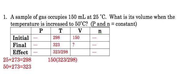So if I take 150 and multiply by 323, and then divide that product by 298, it comes out to 162 milliliters. I should probably round that off to two significant figures, because I only have two significant figures in 150 the way it's written. So 160 milliliters is the final volume.